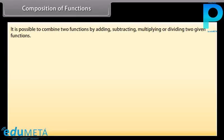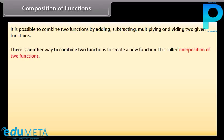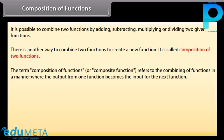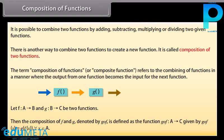It is possible to combine two functions by adding, subtracting, multiplying, or dividing two given functions. There is another way to combine two functions to create a new function, called composition of two functions. The composition of functions refers to combining functions such that the output from one function becomes the input for the next. Let function f from A to B and function g from B to C be two functions. Then the composition of f and g, denoted g∘f, is defined as the function from A to C given by g∘f(x) = g(f(x)) for each x belonging to A.